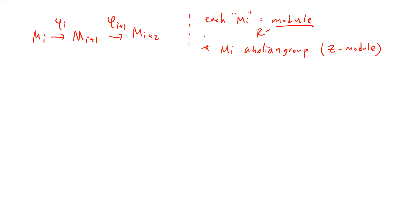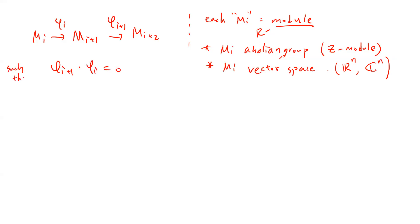If you don't know about abelian groups, maybe you should subscribe to my channel. Otherwise, you can view your M_i as a vector space, or even as a real or complex Euclidean space. Such that phi_{i+1} composed with phi_i is zero. This is the usual notation. By definition, the image of phi_i is a subset of the kernel of phi_{i+1}.